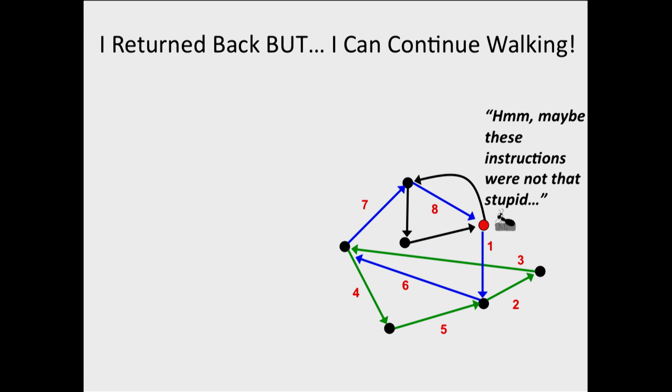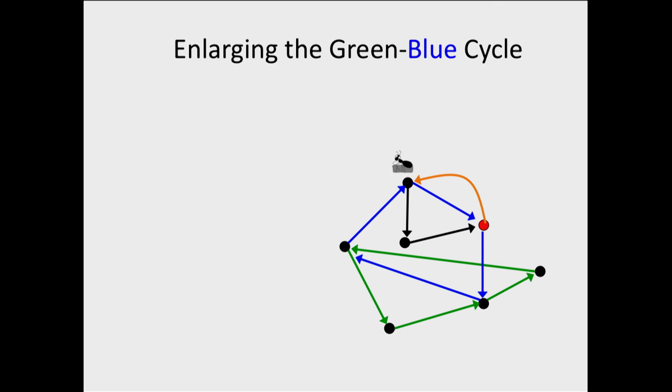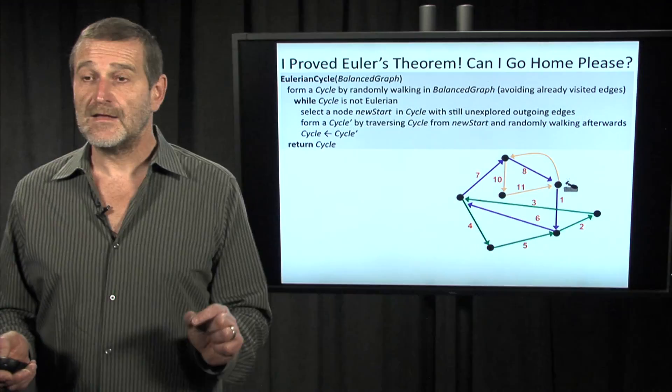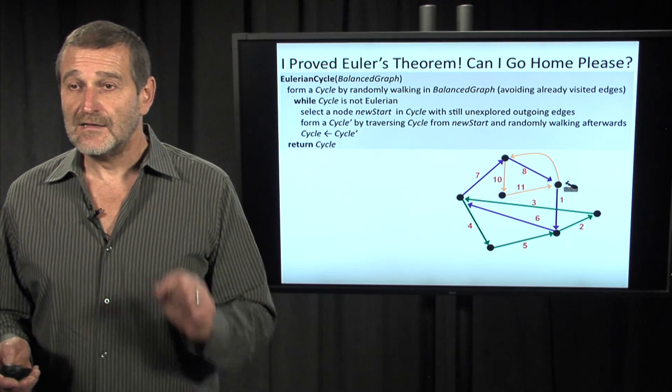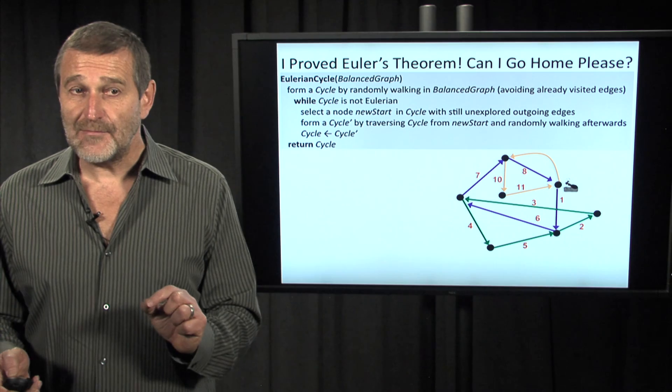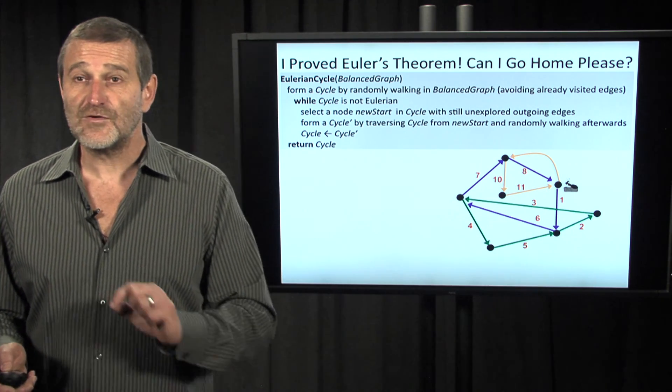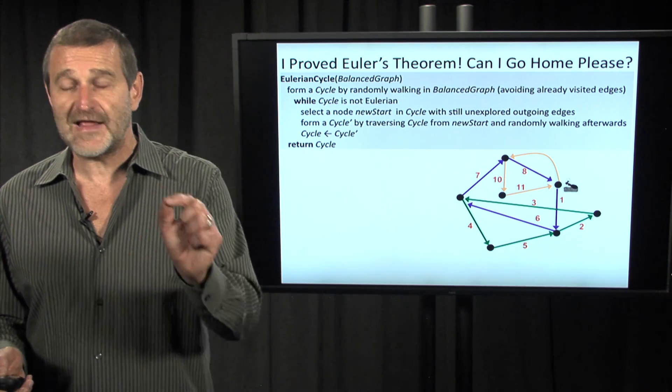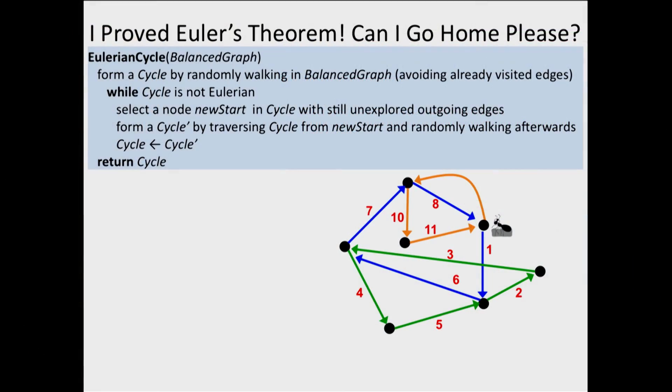But now the ant realizes that the instructions were not that stupid, because there is a possibility to explore further. And it continues and finally the ant constructs the cycle that we wanted, that visits every edge of the graph exactly once. Not only did the ant construct the cycle, we actually just came up with an algorithm. This pseudocode describes our instructions to the ant, and you can implement it to result in an efficient algorithm.